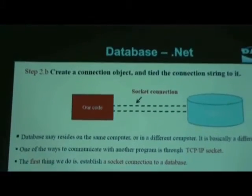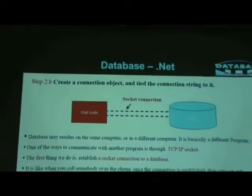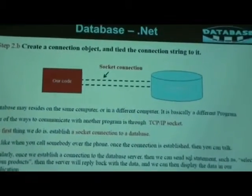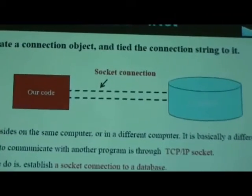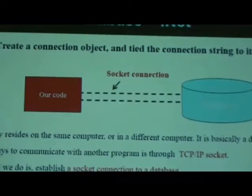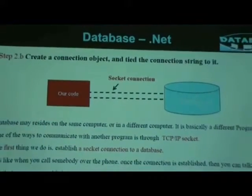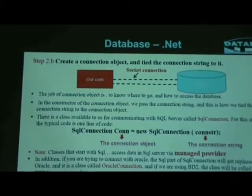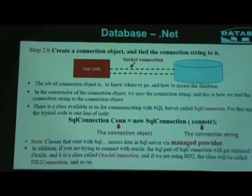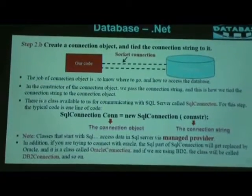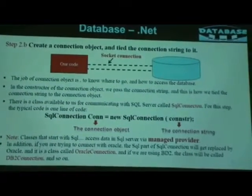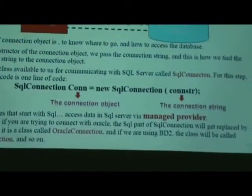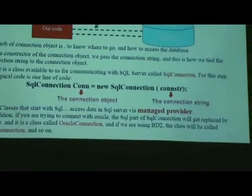Then I mentioned that we need to create a connection object, and we need to tie this connection string to the connection object. The connection object will establish the connection from our code to the database. The typical code is: SQLConnection, we give it a name like 'conn', equal new SQLConnection, and we pass the connection string to the constructor of the connection object.